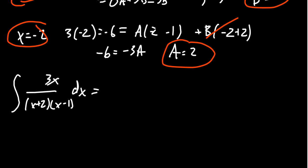By the technique of partial fraction decomposition, we've now discovered that this is the same thing as 2 over x+2 dx. And we add that to 1 over x-1 dx.